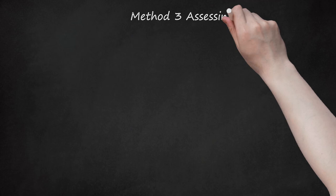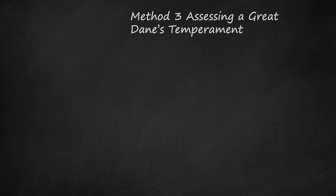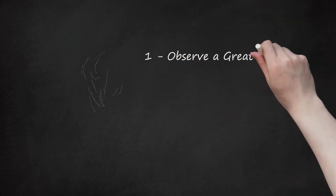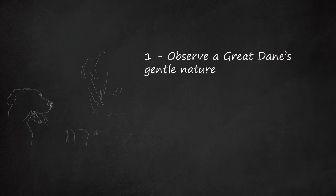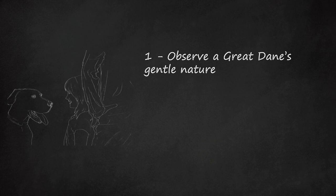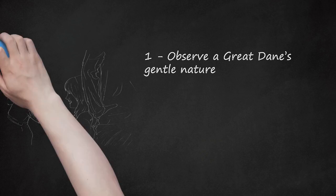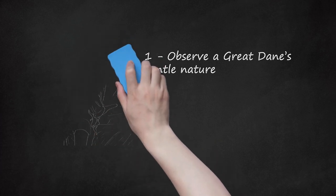Method 3: Assessing a Great Dane's Temperament. Observe a Great Dane's gentle nature. The Great Dane is highly dependable, and it quickly bonds with its owners. Many are mild-mannered, easy-going, and affectionate. It is important to supervise a Great Dane when young children are around. Although these dogs are typically good-natured, their large size could cause them to bump into a young child. It is also important to remember that some dogs' personalities do not conform to breed standards or expectations.